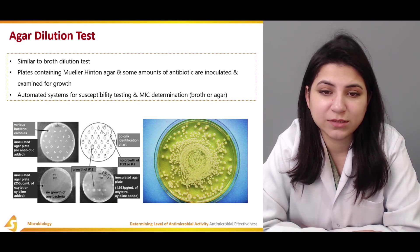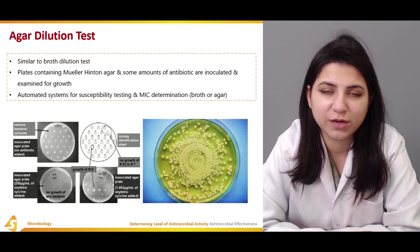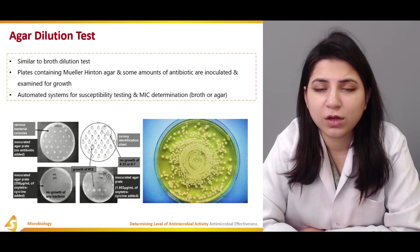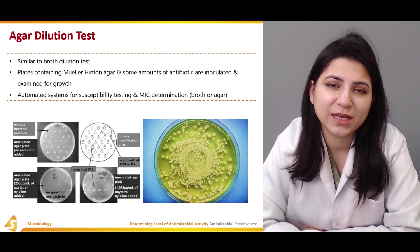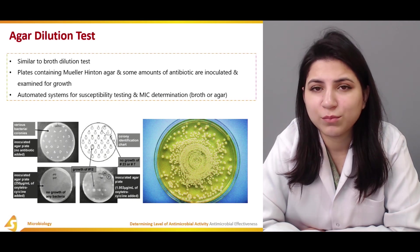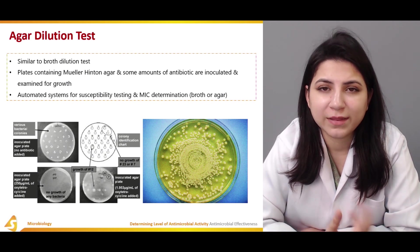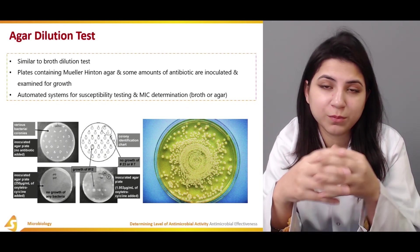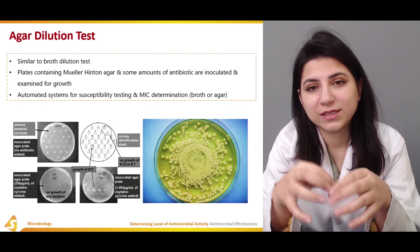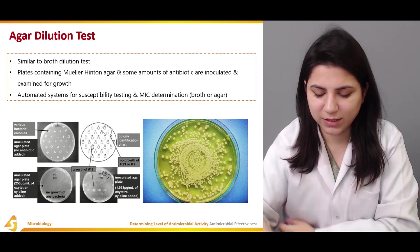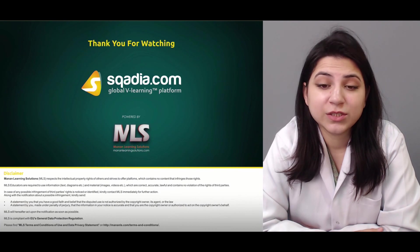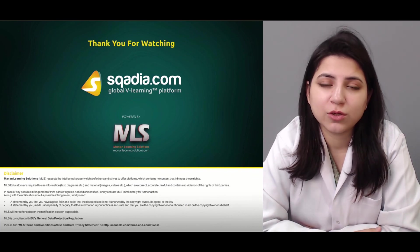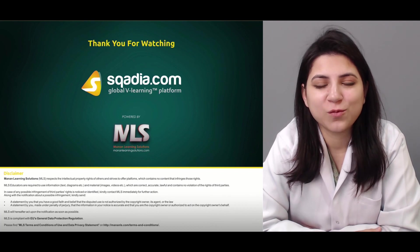There are also automated systems used for susceptibility testing and MIC determination in broth and agar. With growing technology, these automated systems can read the MIC and MLC for you — you just insert the broth, plates, or tubes, and the system reports the minimum inhibitory concentration so you can then take samples to determine the MBC. In this section, we discussed the dilution susceptibility test, one of the tests commonly used to check the effectiveness of antimicrobial agents.